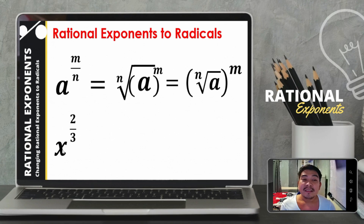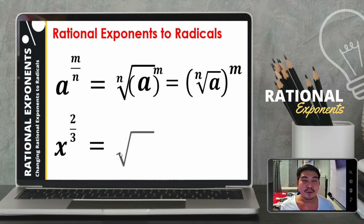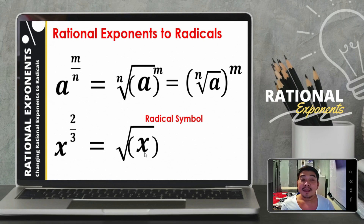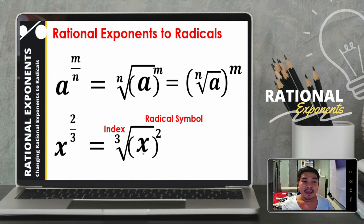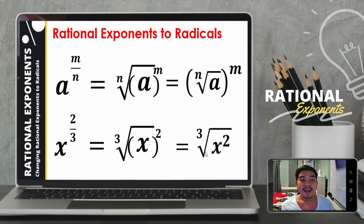For example, let us convert x raised to 2 thirds to radical form. Place the radical symbol, copy the base x inside, put the denominator 3 outside as the index, and put the numerator 2 as the exponent of x inside. Simplifying further, this can be rewritten as the cube root of x squared.